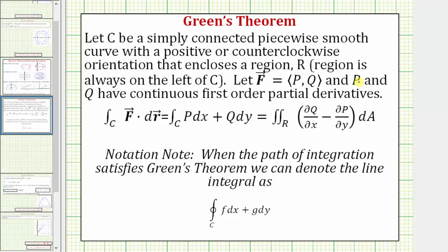When the path of integration satisfies Green's Theorem, we denote the line integral with a circle in the middle of the integral symbol, which in our example we had. Before we go back to our example, let's talk more about what a simply connected, piecewise smooth curve with a positive or counterclockwise orientation is.